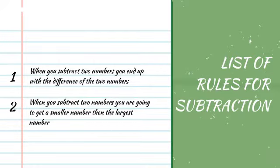The second set of rules we're going to learn today is the rules for subtraction. When you subtract two numbers, you end up with the difference of two numbers. When you subtract two numbers, you are going to get a smaller number than the larger number.